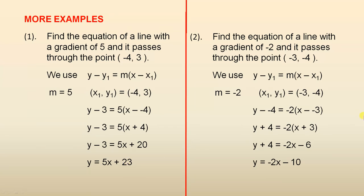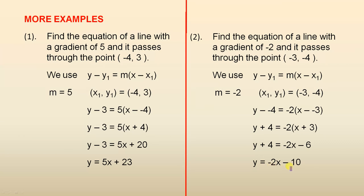The next example: find the equation of a line with a gradient of minus two and it passes through the point minus three minus four. Here m is negative two and x one y one is minus three minus four. Substituting: y minus minus four equals minus two outside of x minus minus three, so y plus four equals minus two outside of x plus three. Removing the grouping symbols gives y plus four equals minus two x minus six. Subtracting four from both sides gives y equals minus two x minus ten. The gradient is minus two and the y intercept is minus ten.